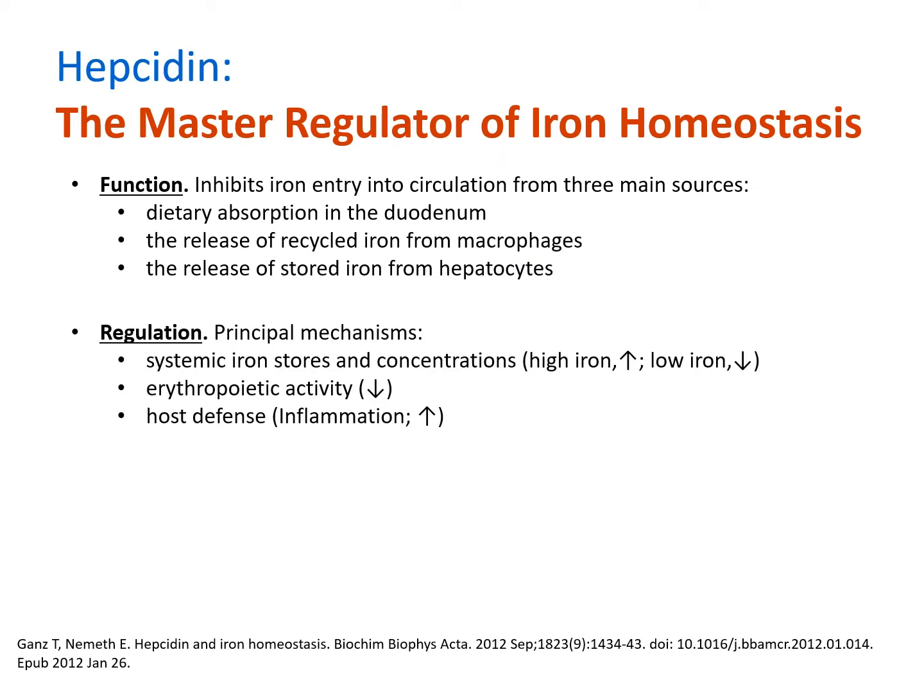The regulation of hepcidin expression is complex, combining iron homeostasis, erythropoietic demand, and nutritional immunity. When plasma iron levels are high, hepcidin expression increases, which stops more iron from entering circulation, preventing a state of iron overload that could lead to the formation of reactive oxygen species.